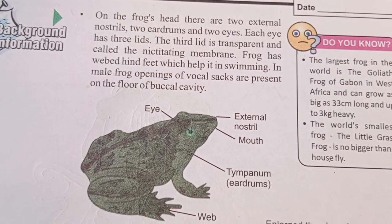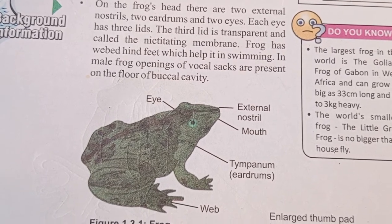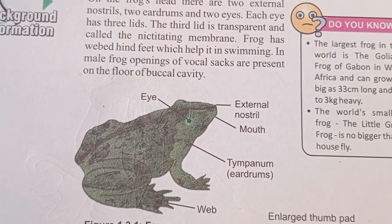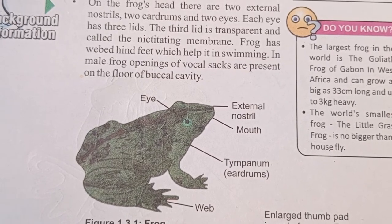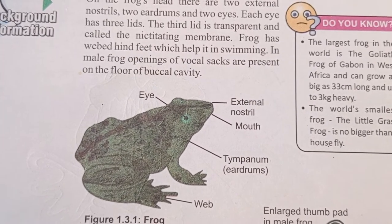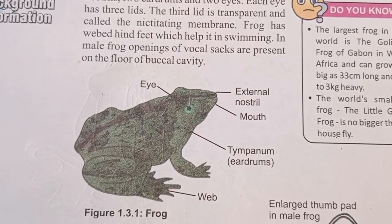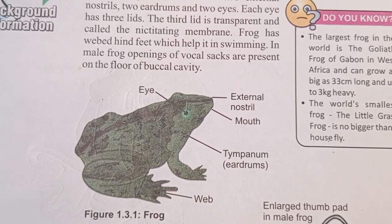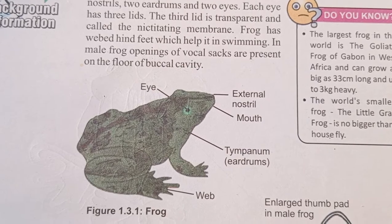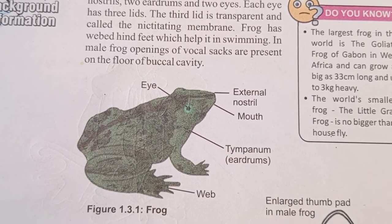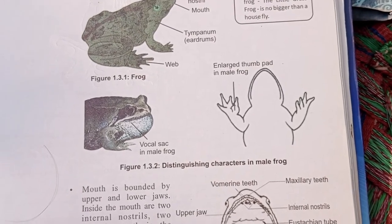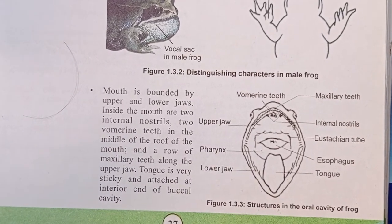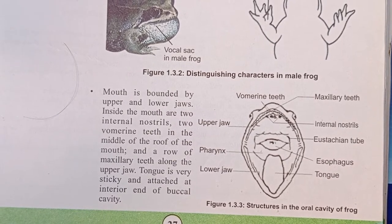The frog has webbed hind feet which help in swimming. In the male frog, vocal sacs are present on the floor of the buccal cavity. The mouth is bounded by the upper and lower jaws.